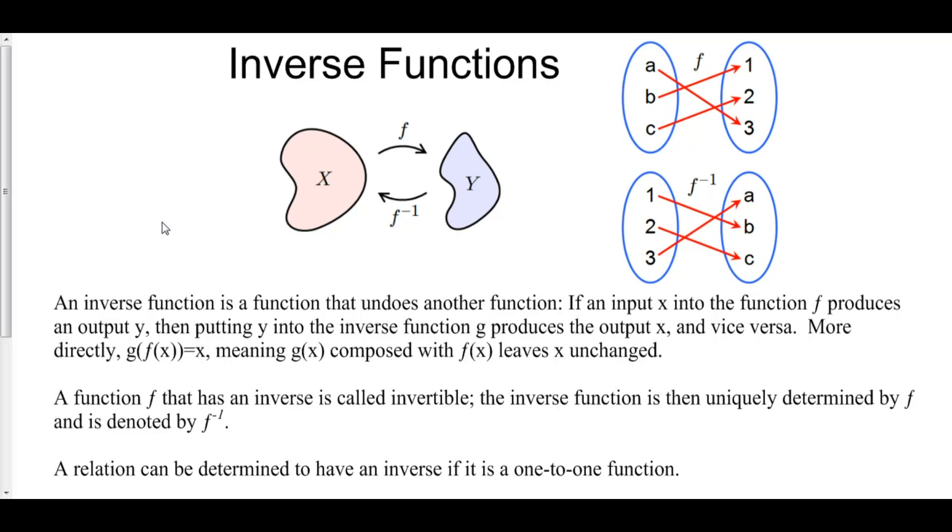So an inverse function is a function that undoes another function. If an input x into the function f produces an output y, then putting y into the inverse function g produces the output x, and vice versa.